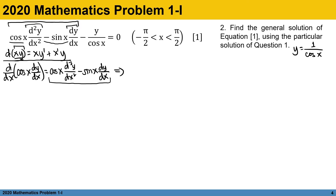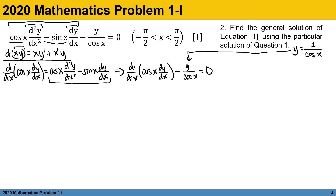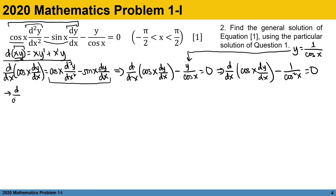We express the original problem as d over dx of cosine x times dy over dx, minus y over cosine of x, equals 0. Substituting our particular solution y equals 1 over cosine x for the last term gives d over dx of cosine x times dy over dx, minus 1 over cosine squared of x, equals 0. Rearranging: d over dx of cosine x times dy over dx equals 1 over cosine squared x, which is also secant squared of x.